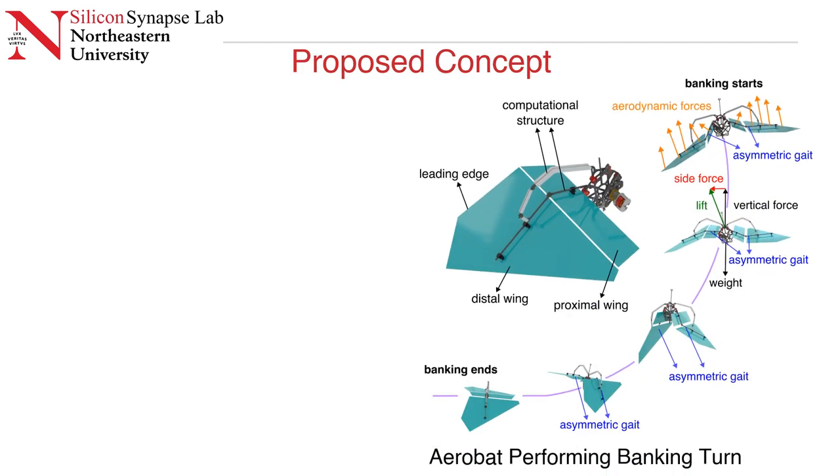With this cartoon picture, I want to show the concept that we are using to perform orientation control on this robot. The banking starts when the aerobat is rolled sideways, which generates a side force, which helps to yaw the robot and get the desired banking turn. The idea to roll the aerobat body can be achieved by creating asymmetric gaits between both wings.